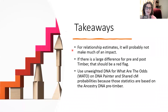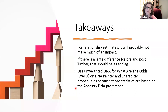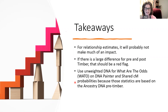A few takeaways: as shown in that example, for relationship estimates it probably won't make much of an impact. If there is a large difference between pre- and post-Timber amounts, that would be a red flag — we should look at the relationships again and see if something else is going on. Use the unweighted DNA for 'What Are the Odds' on DNA Painter and the Shared Centimorgan probabilities, because those statistics are based on Ancestry DNA pre-Timber. Blaine Bettinger's histograms are not based on that, but the probabilities from Lea Larkin, the DNA Geek, are. DNA matches under 90 centimorgans have so many possibilities for relationships that it really doesn't matter much which number you use.